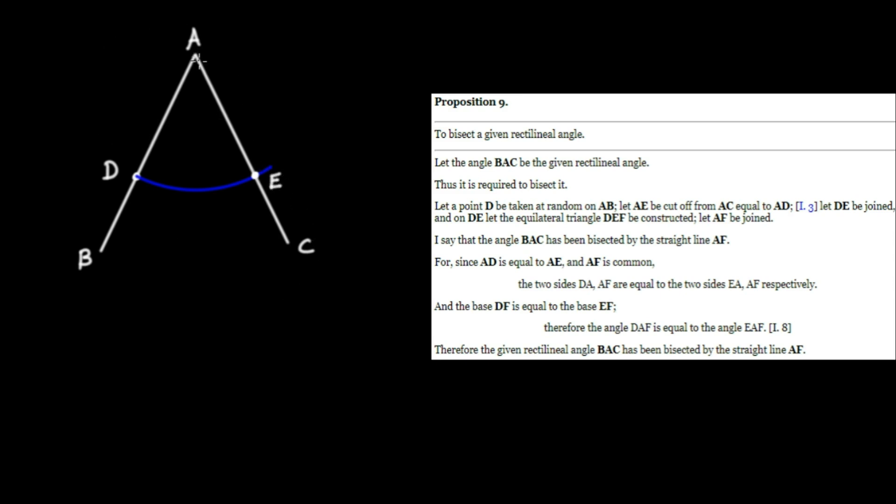So that AE is going to be equal to AD. So we cut off from the bigger line segment AC a part AE which is equal to AD. And next, we join DE. So we'll just join those two.